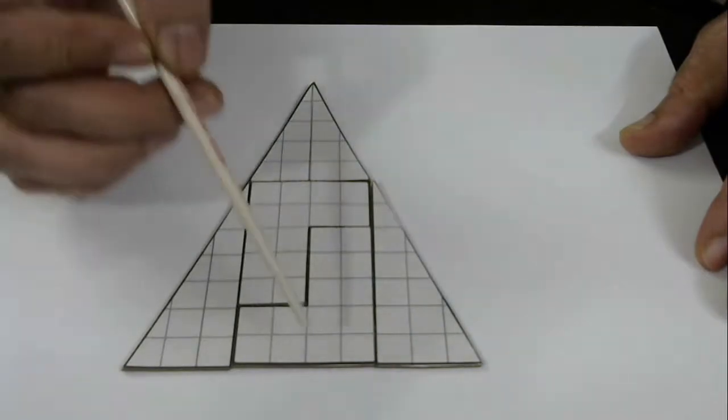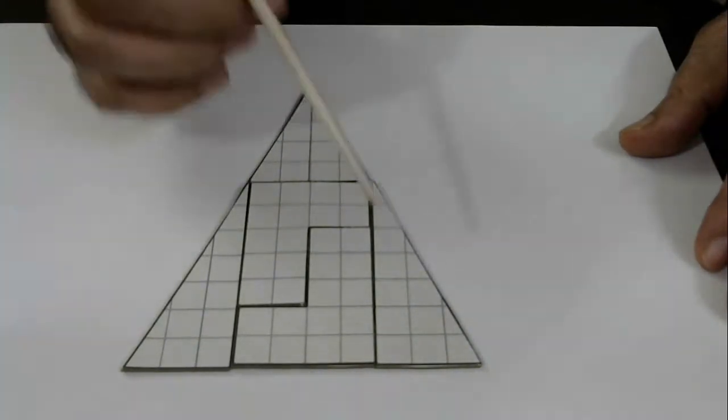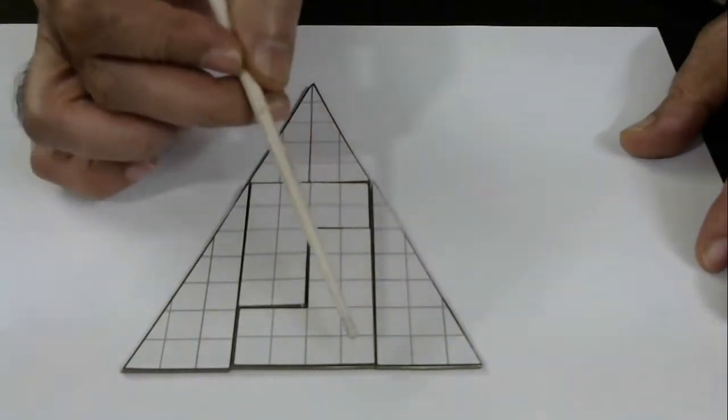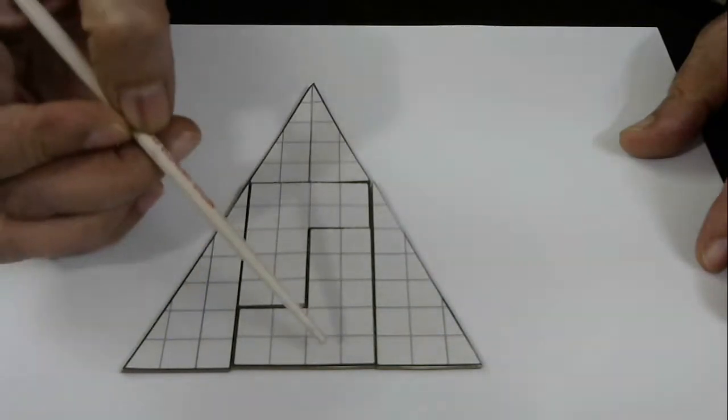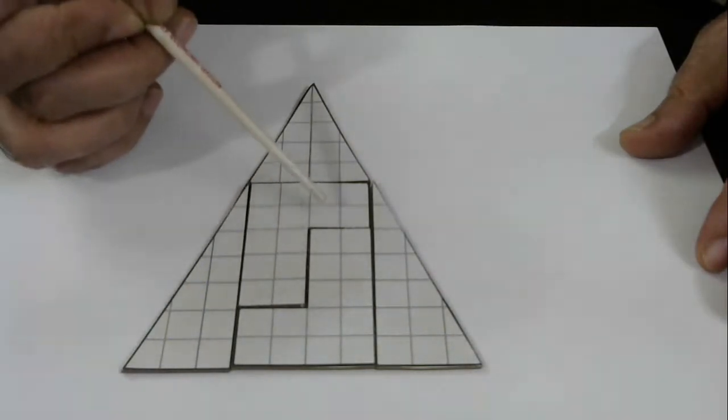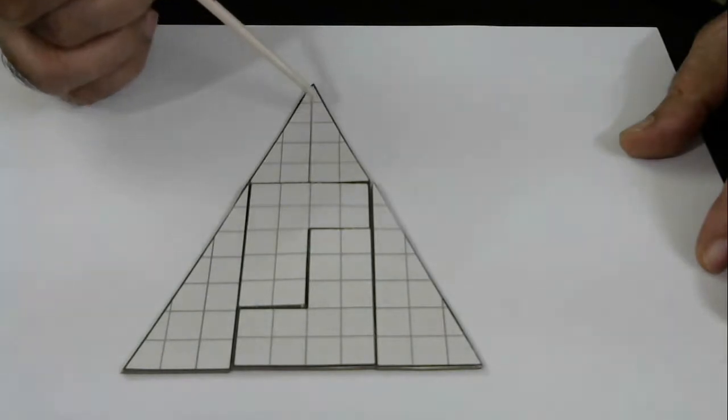In this triangle, the area is base times height divided by 2, and the base is 1, 2, 3, 4, 5, 6, 7, 8, 9, 10 and the height is 1, 2, 3, 4, 5, 6, 7, 8, 9, 10, 11, 12.